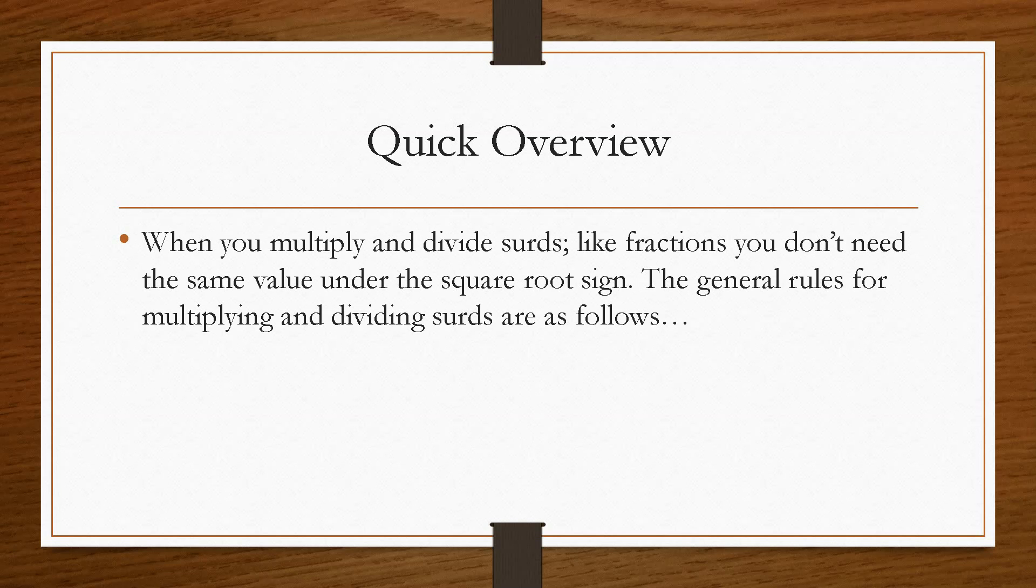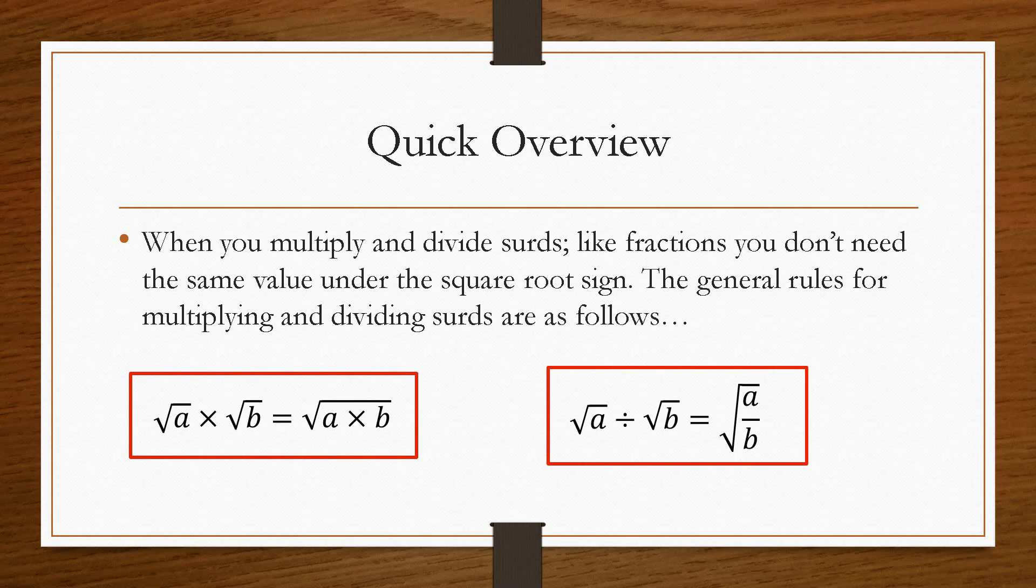And when you multiply and divide surds, just like fractions, you don't need the same value underneath the square root sign. And the two general rules are: for multiplying surds, you simply take the value in the first surd and multiply it by the value of the second surd. And likewise, when you divide surds, you simply do the first value divided by the second value.